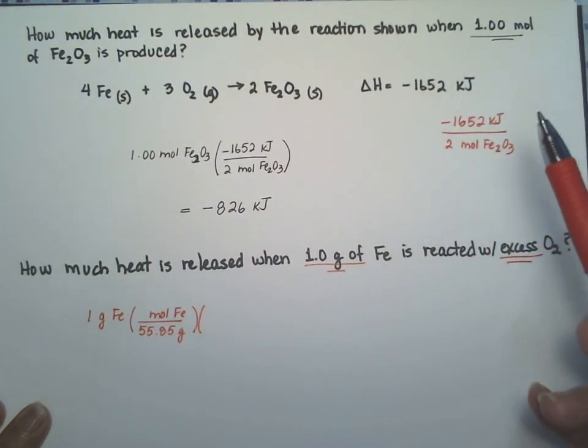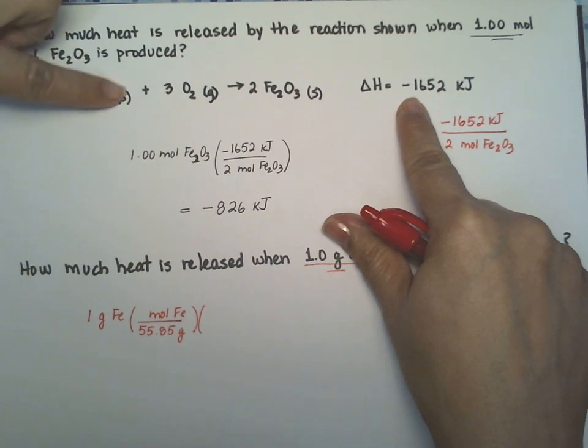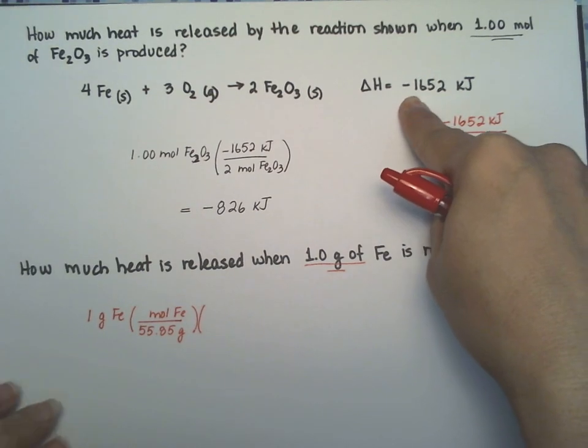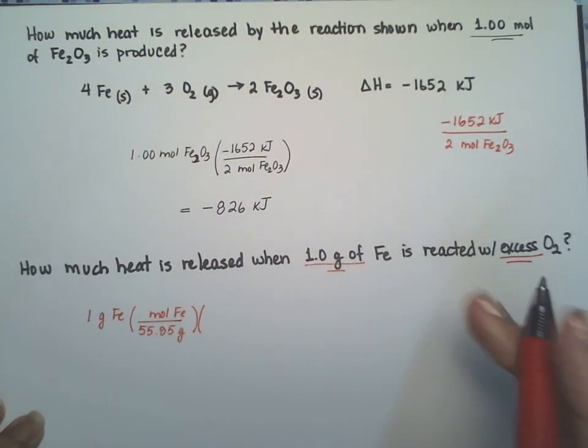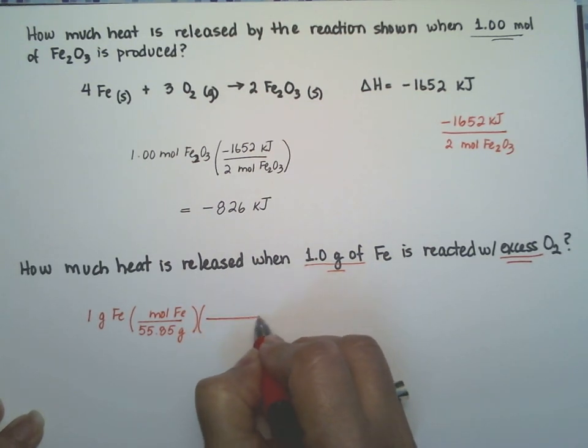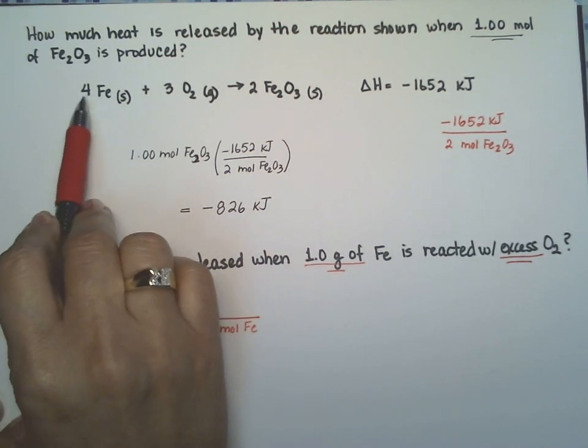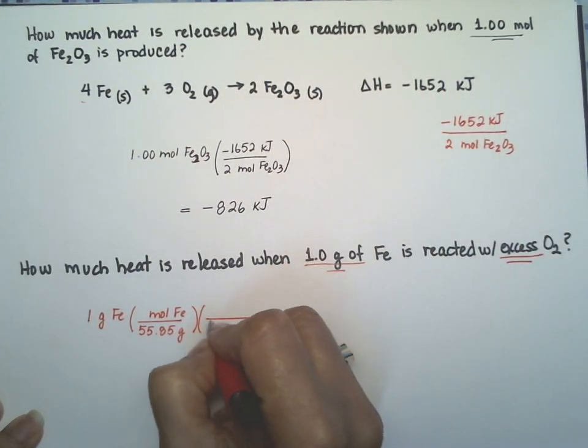Now we're going to use a different conversion factor because this delta H is for whenever we have four moles of the iron solid. They want it for one gram, so we're going to do a different conversion factor. This one is for four moles of iron releasing 1,652 kilojoules.